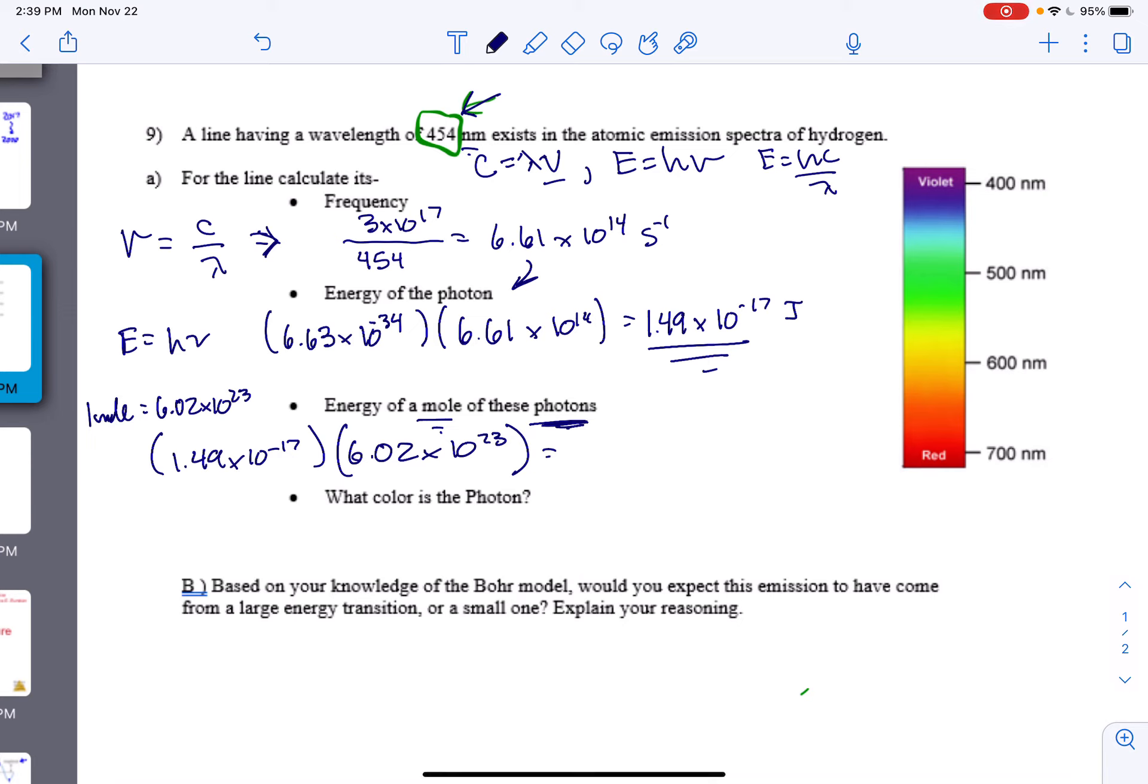which is 6.02 times 10 to the 23rd. And I end up with 896,7148 joules.